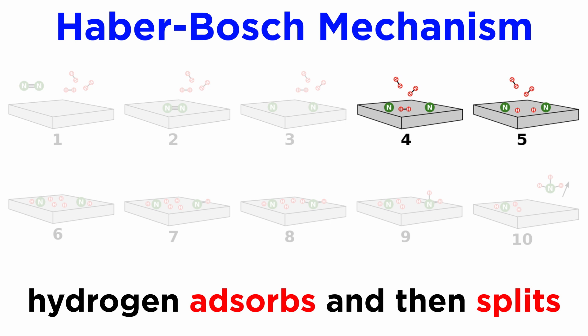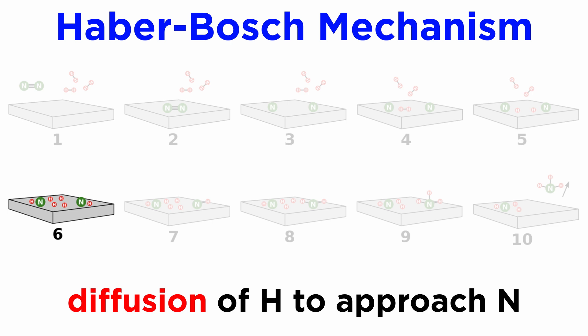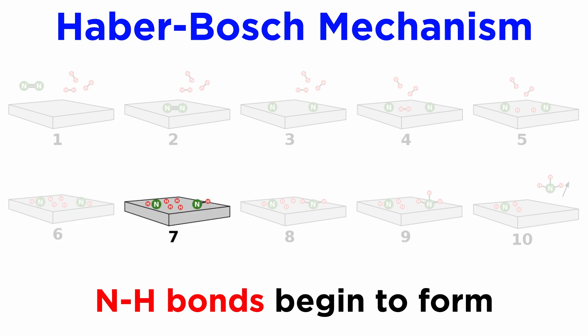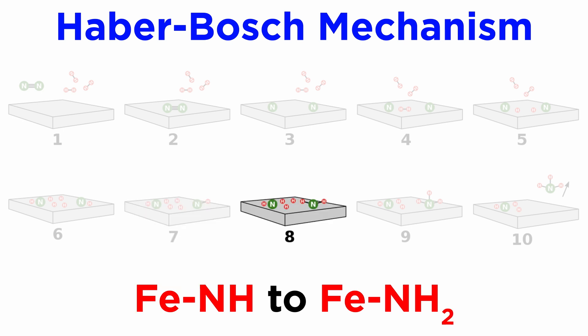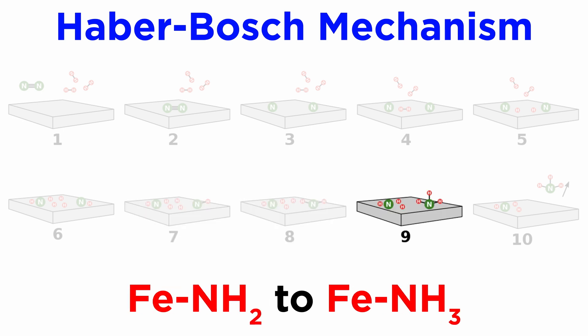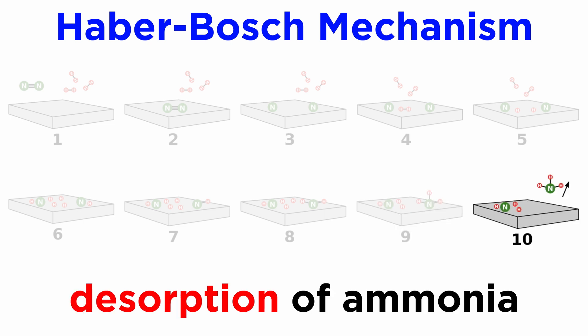In steps 4 and 5, it is hydrogen's turn to adsorb and split into two hydrogen atoms. In step 6, there has to be diffusion of the hydrogen atoms so they reach reacting distance with nitrogen atoms, and finally N-H bonds begin to form. We transition from Fe≡N species to Fe=NH, then FeNH₂, and finally adsorbed ammonia, or FeNH₃, which in step 10 begins to desorb and return to the gas stream.